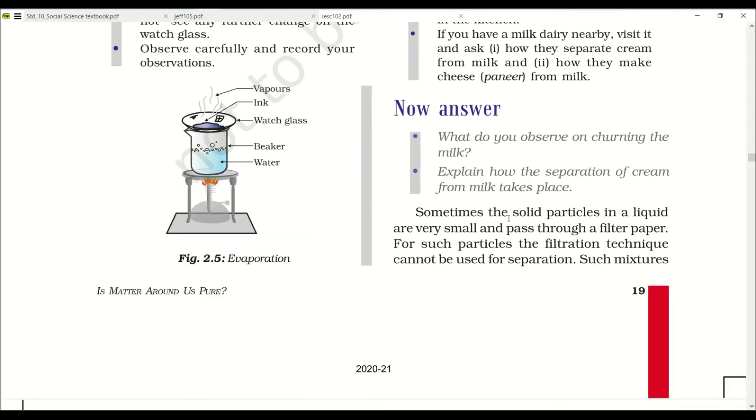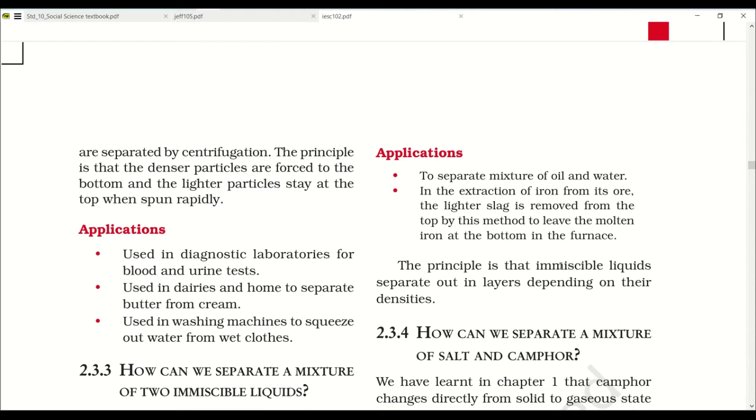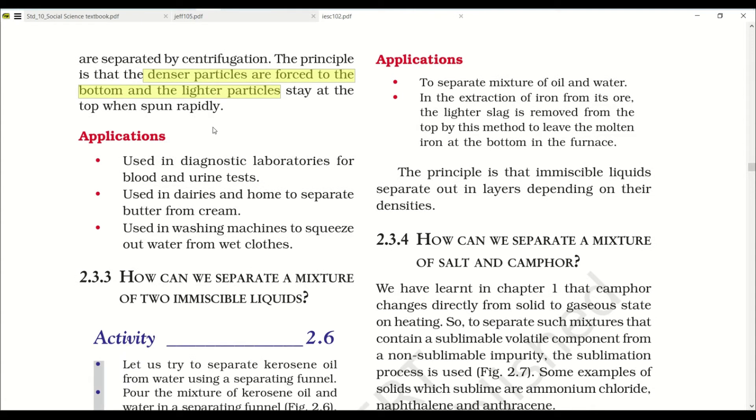Sometimes the solid particles in a liquid are very small and pass through filter paper. For such particles, the filtration technique cannot be used for separation. Such mixtures are separated by centrifugation. The principle is that the denser particles are forced to the bottom and the lighter particles stay at the top when spun rapidly. It is used in diagnostic laboratories for blood and urine tests, dairies to separate butter from milk, and washing machines to squeeze out water from wet clothes.